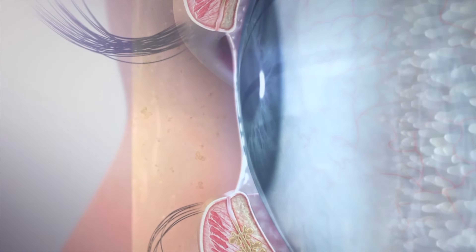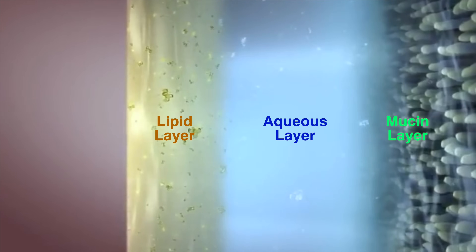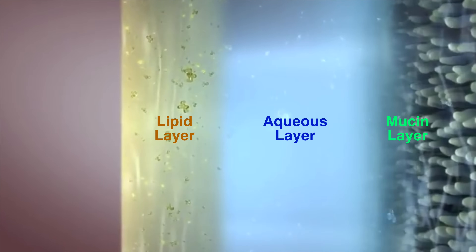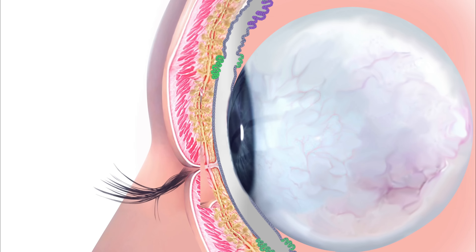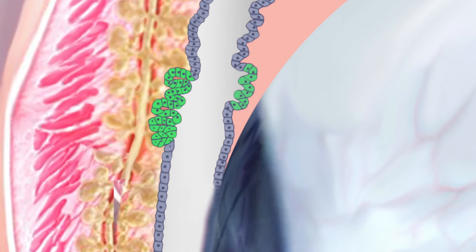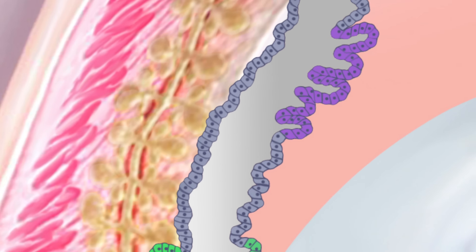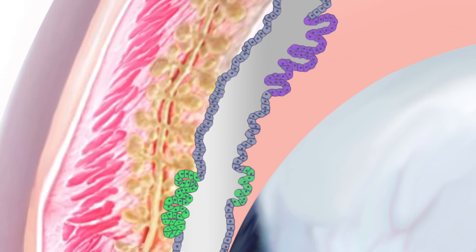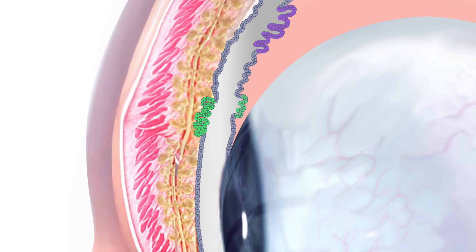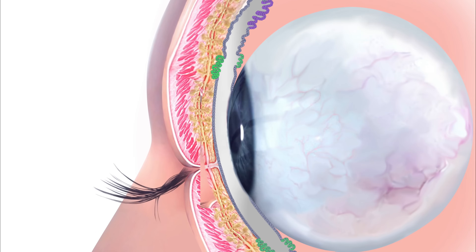The mucous layer is the deepest layer of the tear film and adheres firmly to the eye's surface. The mucous found in this layer is produced by conjunctival epithelial cells as well as within the crypts of Henley and glands of Manse. This mucous layer allows the aqueous layer to adhere to the eye's surface, thereby preventing beading. By lowering the surface tension between the aqueous and mucous layers, it also acts as a wetting agent and a stabilizing agent for the tear film between blinks.